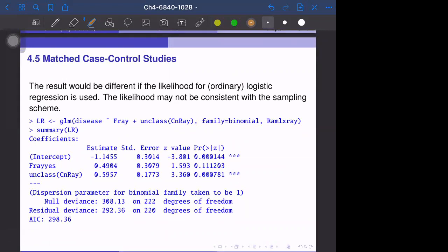Matched case-control studies, the model is different from logistic regression. One observation is one subgroup. In the likelihood function, if you fit the usual logistic regression, that is not consistent with the sampling scheme. If you fit the GLM as usual with the binomial option, then the result is different.